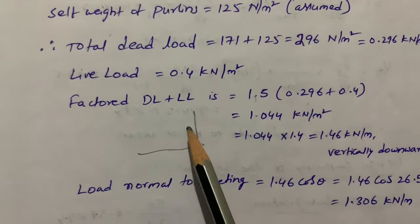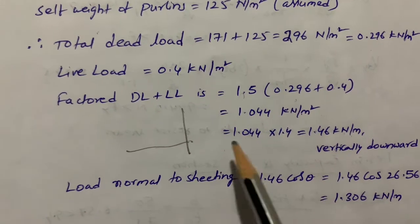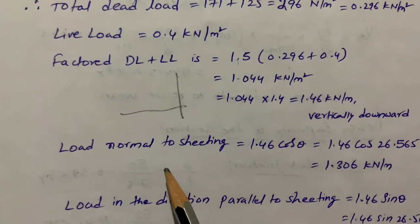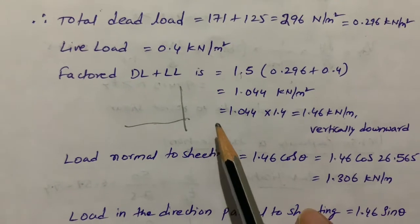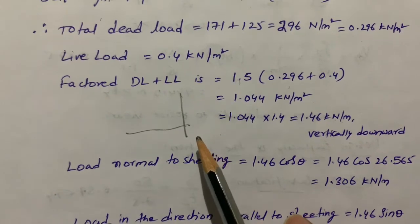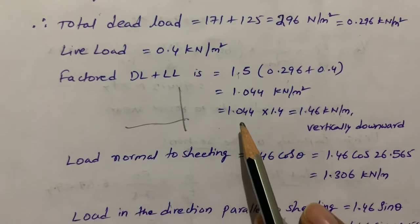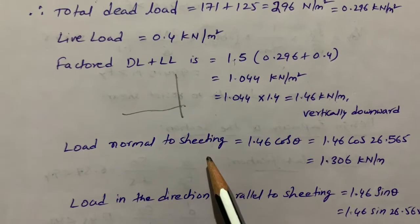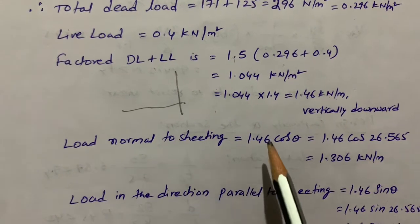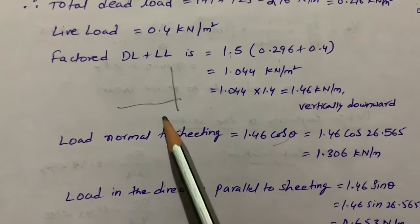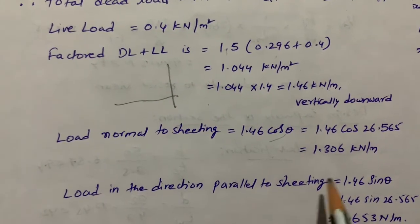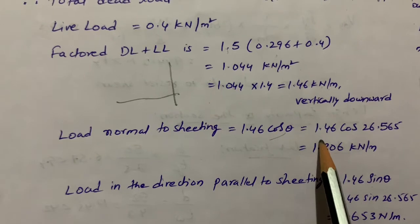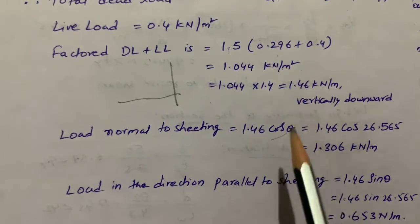Usually dead load plus live load acts vertically downward due to gravitational force. For load normal to sheeting — on purlins where sheeting (asbestos cement sheets or galvanized resin sheets) is placed on top — we consider the component along the x-axis as cosine, and the component parallel to the sheeting as sine. So 1.46 × sin θ gives the parallel component, yielding the two resolved load values.